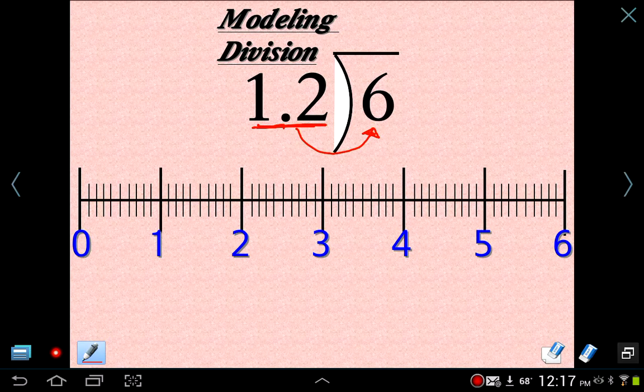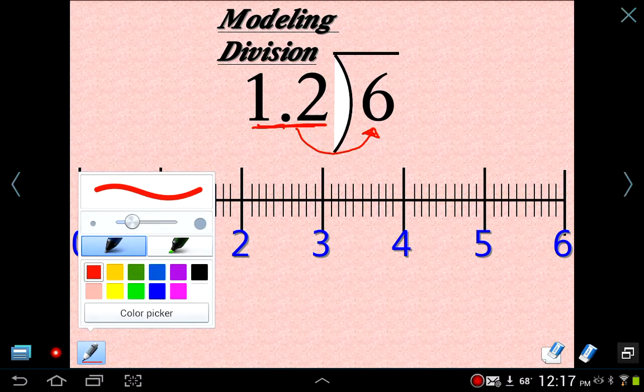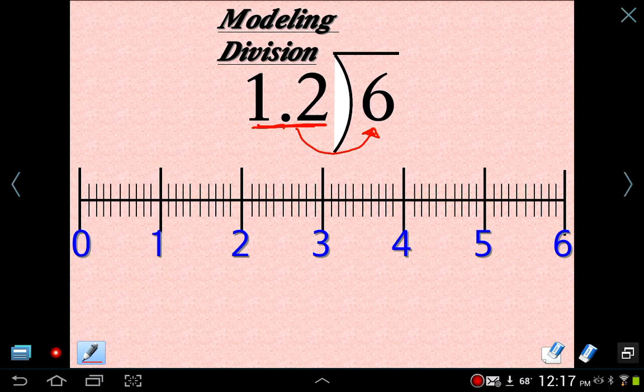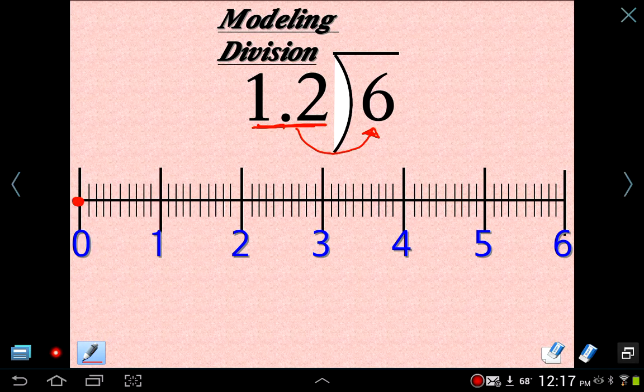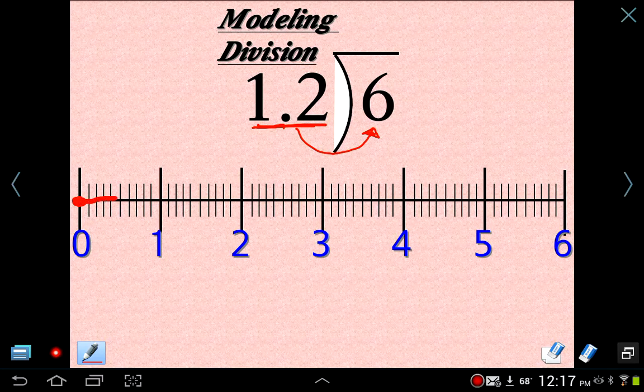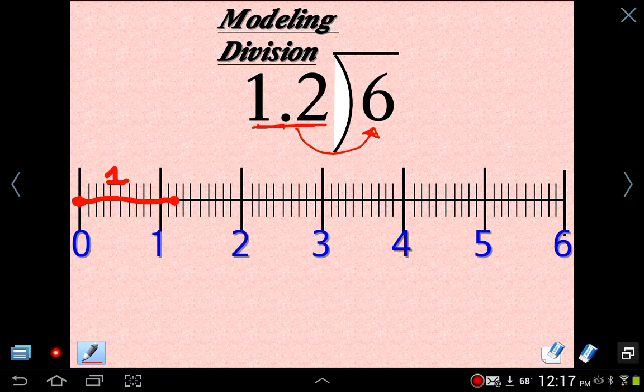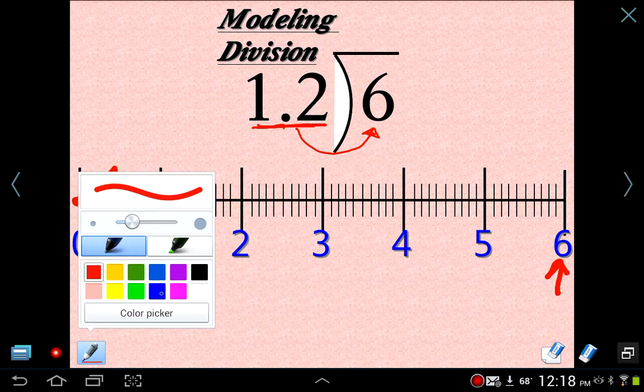And I did that because we're dealing with 1.2. So 1.2 means 1 and 2 tenths. So that's what I want to figure out. I want to figure out how many of these go into here. That's really what division's all about. So let's go ahead and figure this out. I'm going to start at 0.